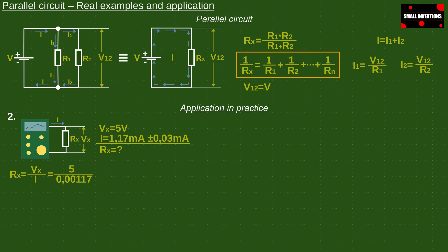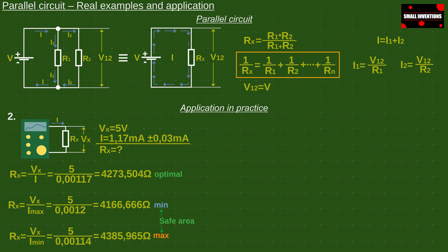We will first calculate the optimal value of the resistor. Then we calculate the minimum value. And once again we calculate the maximum value of the resistor Rx. All values between minimum and maximum are acceptable but we will look for the best result.